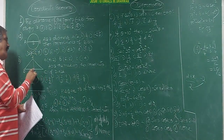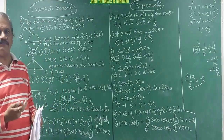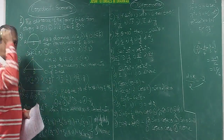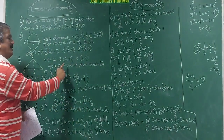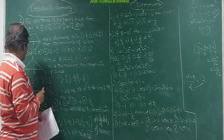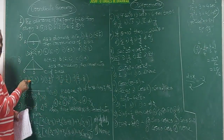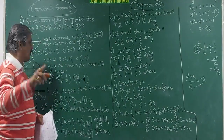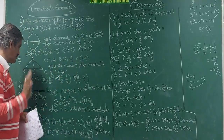ABC is a triangle; AD is the median. Median means it bisects the opposite side from the vertex, so D is the midpoint of BC. Immediately apply (x1 + x2)/2, (y1 + y2)/2. With B and C given, compute: (6+1)/2 = 7/2, and (5+4)/2 = 9/2. You can spot 7/2 in the options immediately.